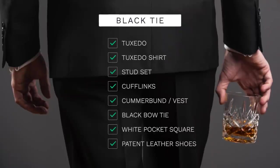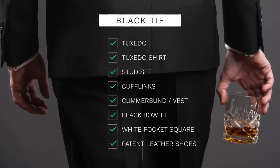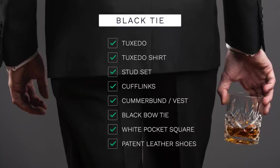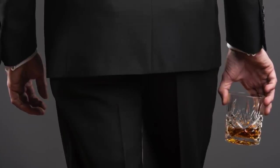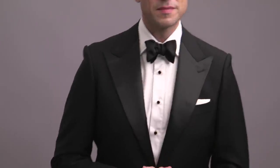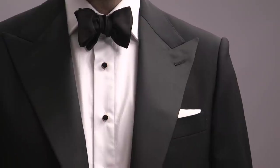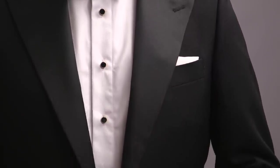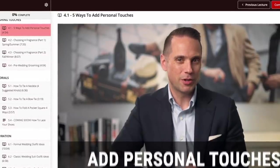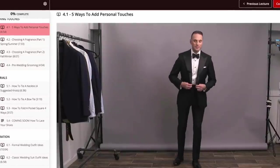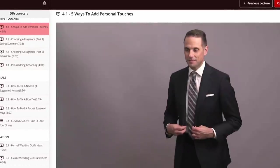Basic outfit checklist for black tie: a black tuxedo, white tuxedo shirt, stud set, cufflinks, a cummerbund or vest, black bow tie, white pocket square, and black patent leather shoes. If there seems like there's not too much room for creativity here, black tie is kind of designed to be that way. However, there are definitely ways that you can add personal touches, which I'll cover in depth in a video later on in the course.